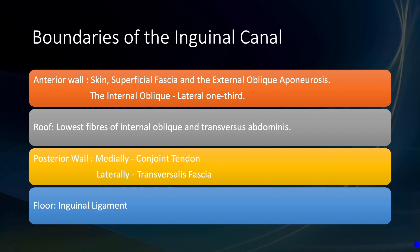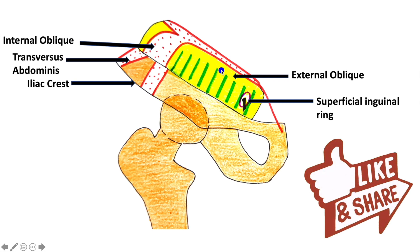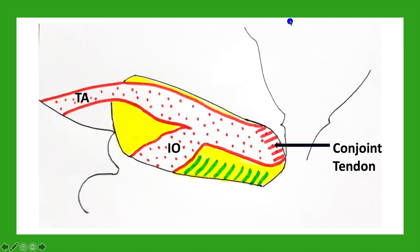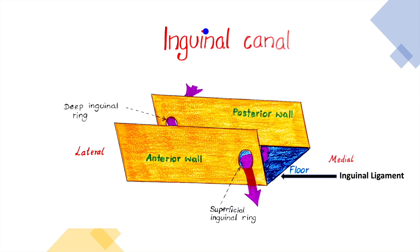Boundaries of the inguinal canal. I will explain this using the following diagrams. The anterior wall is formed by skin, superficial fascia, and the external oblique aponeurosis; the internal oblique forms the lateral one-third. The roof is formed by the lowest fibers of the internal oblique and transversus abdominis, which form the conjoined tendon. The posterior wall is formed by the conjoined tendon medially and the transversalis fascia laterally. The floor is formed by the inguinal ligament.